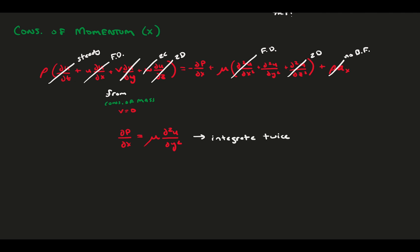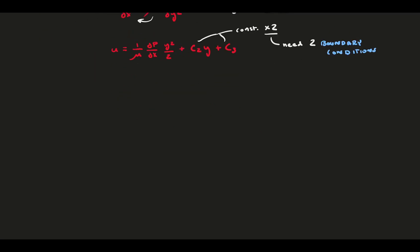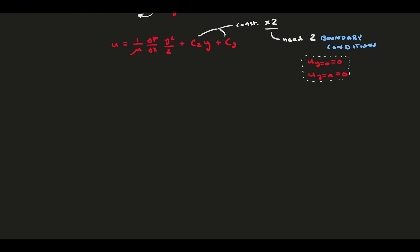If we integrate this, we can isolate the u-velocity field with two unknown constants. Because we have two constants, we need two boundary conditions to solve for them. Let's use the boundary conditions of u near the wall. The first boundary condition is that the velocity at y equals zero is zero. This lets us quickly get that c3 must be zero. The second condition is that the velocity is zero at y equals a. With a bit of rearranging, this tells us that c2 is 1 over mu times the pressure gradient times a over 2. If we plug the constants c2 and c3 back into the original u equation, we get the u-velocity function for pressure-driven channel flow.